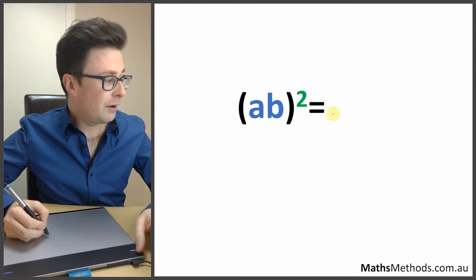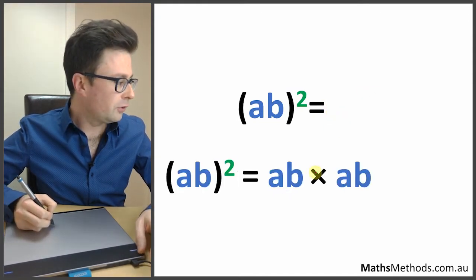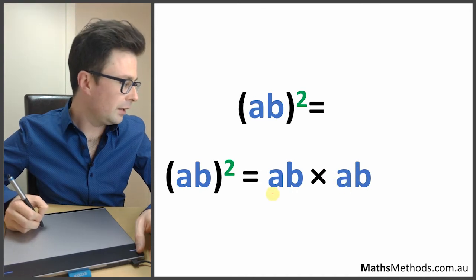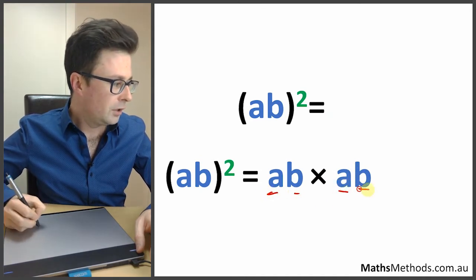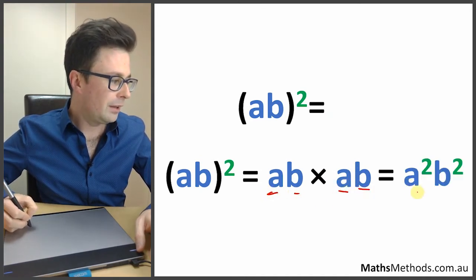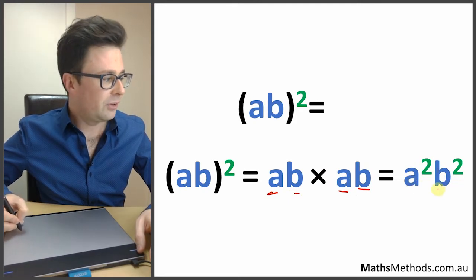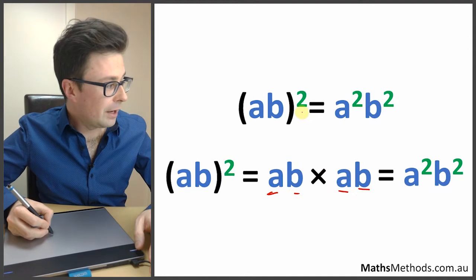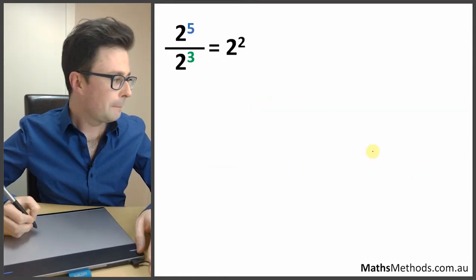If you've got ab to the power of 2, that means you've got 2 ab's multiplied by each other, giving 2 a's and 2 b's. So another way of writing that is a to the power of 2 times b to the power of 2. The trick is that the power just distributes to both things inside the bracket.